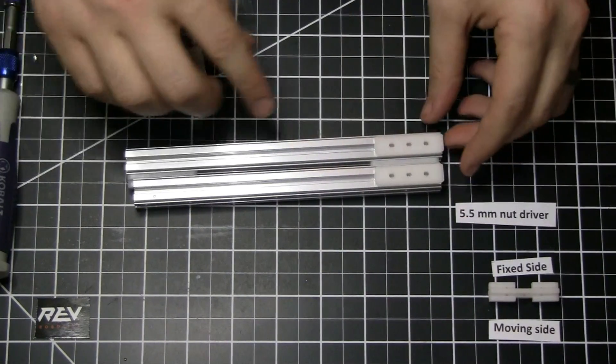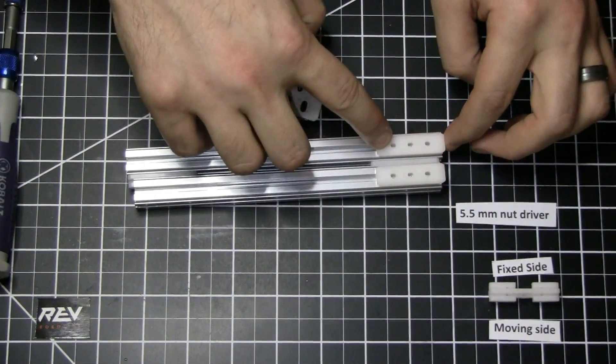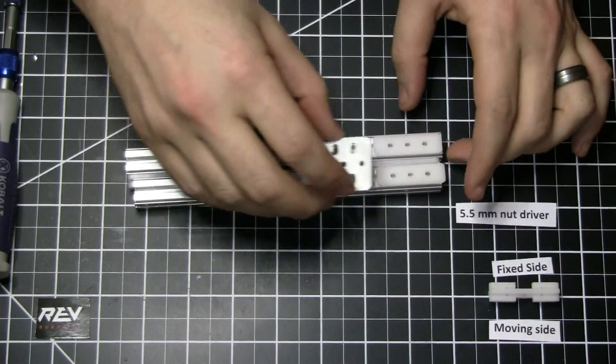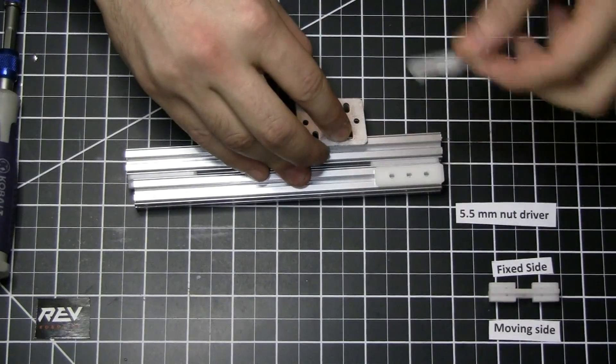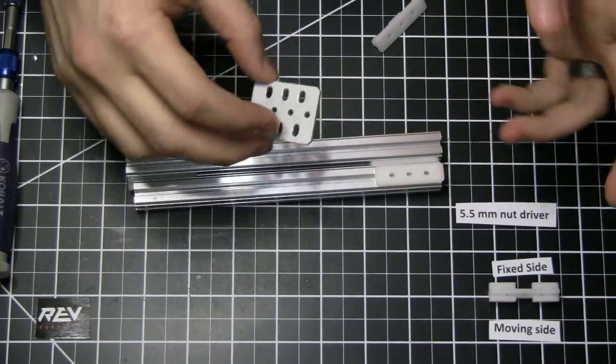So what you would do is one of these gets bolted down and one of these stays a little bit loose. This is where it gets a little bit tricky also. The other option is to just use a spacer instead of another one of these sliders for the side that you want to bolt down.